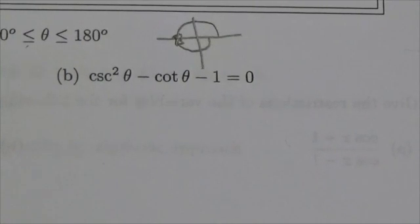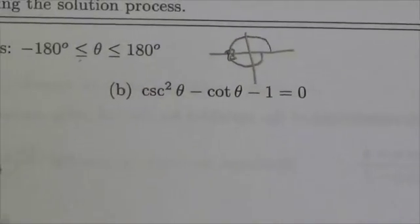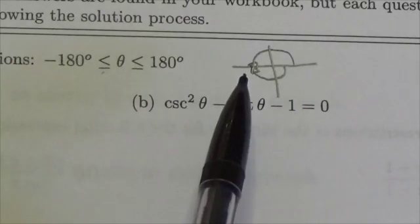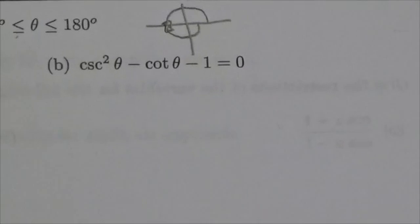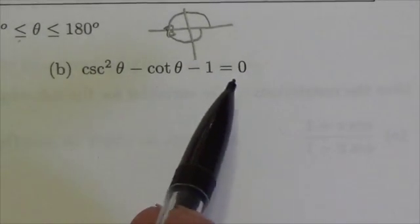Hi everybody, this is the trig2 review and this is question 1b. We're going to solve this equation right here, but remember that we're solving it within the domain negative 180, so a negative half rotation, out to a positive half rotation. Let's take a look at the equation. Cosecant squared theta minus cotangent theta minus 1 equals 0.